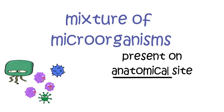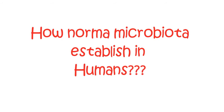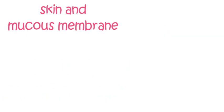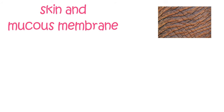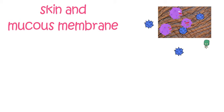The question is, how is normal microbiota established in the human body? In humans, surface tissues like skin and mucous membranes are constantly in contact with environmental microorganisms. These environmental microorganisms can easily colonize themselves on surface tissues like skin and mucous membranes.